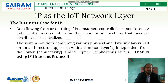As we know, when data flows from the network to the things or from things to the network, the data is consumed, controlled, or monitored by data center servers either in the cloud or in locations that may be distributed or centralized. System solutions combining various physical and data link layers call for an architectural approach with a formal layer independent from the lower connectivity or upper application layer — that is, using internet protocol.